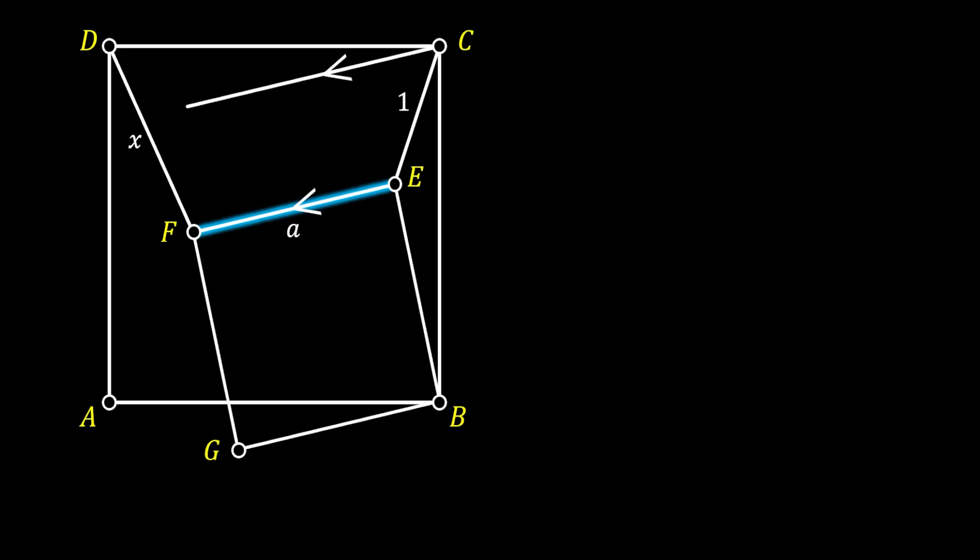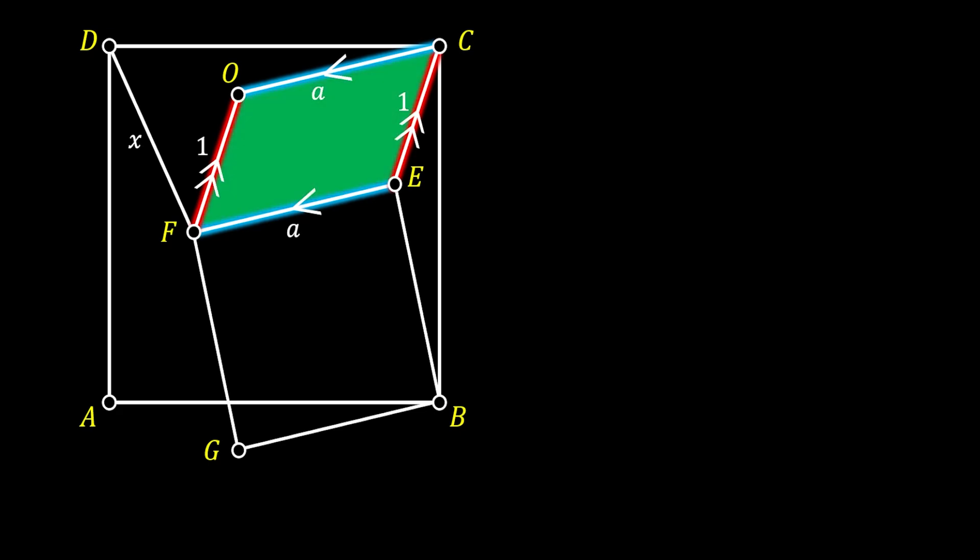Now let's have a look at the line EC. It has the length of one and we're going to take this line and slide it to the left along those two parallel lines we constructed and we're going to label its intersection point with the upper line as O. Now since the line EC is parallel to the line FO, we can conclude that the line OC also has the length of A. This means that our newly formed quadrilateral FECO is actually a parallelogram and we're going to use that fact later.